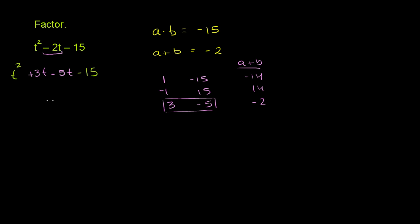Now we're ready to factor by grouping. Let's take the first two terms right there. What's the common factor? Well, a common factor there is t. So if I factor t out, that becomes t times — t squared divided by t is t, and 3t divided by t is 3. So these first two terms are the same thing as t times t plus 3.